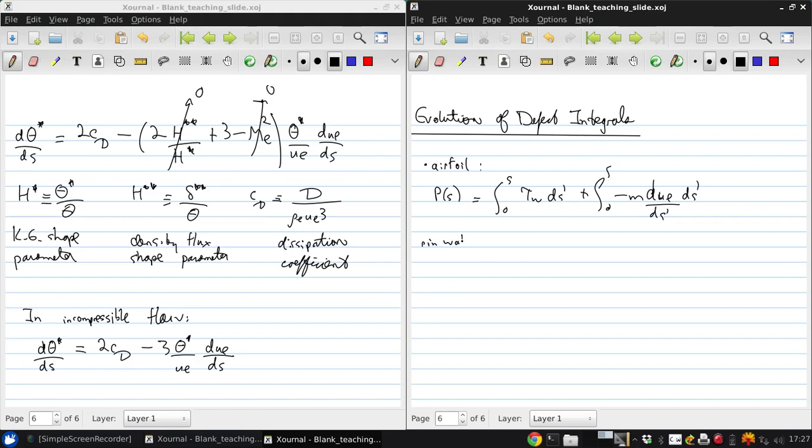In the wake, P of s will be P that starts out at the trailing edge, plus the integral from the s-coordinate of the trailing edge to wherever s we are of negative m d u e ds prime. This is because tau wall is 0 in the wake, because there is no wall.